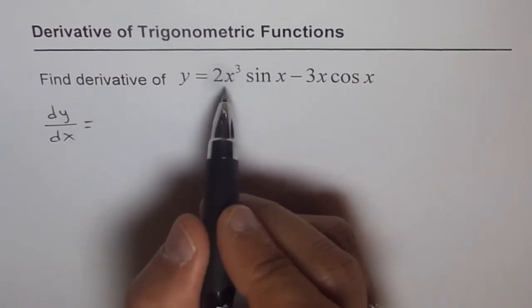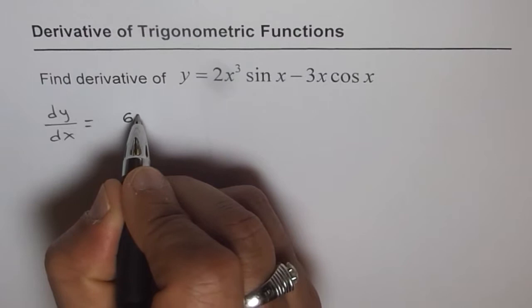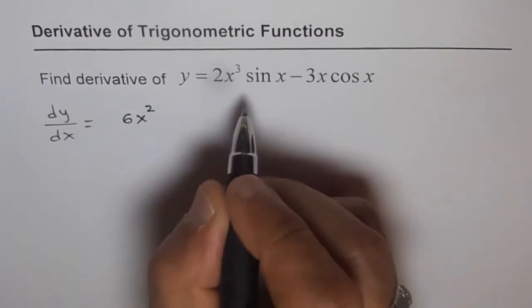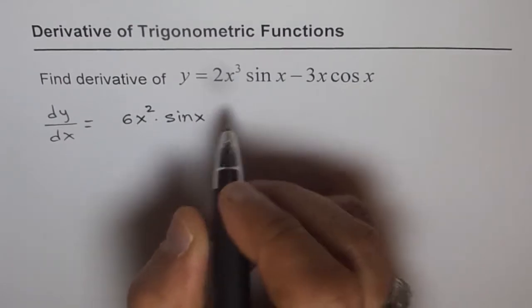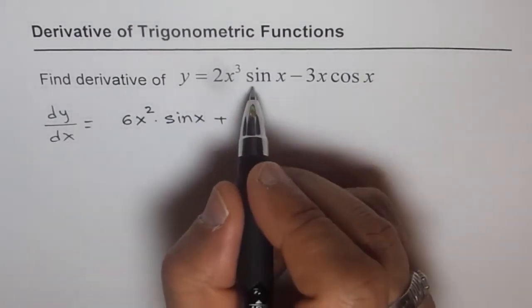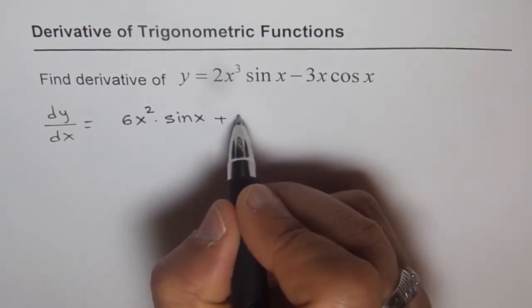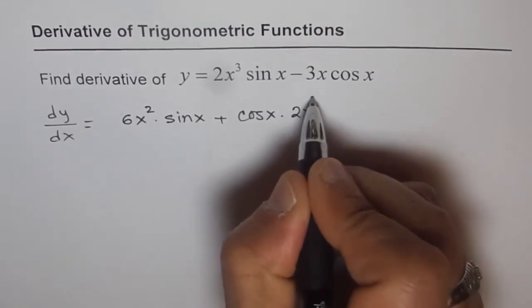Derivative of 2x cubed is 6x squared, so we get 6x squared times sin x plus derivative of second factor is cos x, so we have cos x times the first one, which is 2x cubed.